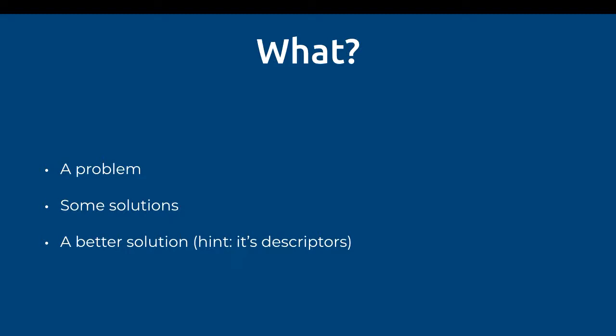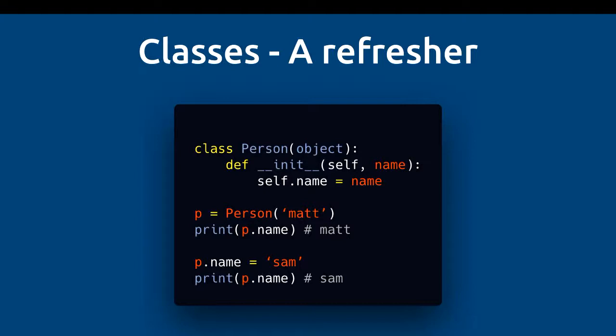So to outline this talk, today I'm going to be presenting a problem, some solutions to this problem, and a better solution which is going to use descriptors and why I think that's better. So before we get started, I'd like to cover a quick class. Here we have a person class, and you can see that it's got its initialization method with one attribute, which is name. We can create a person called Matt, and we can access this name attribute using p.name. We can also reassign to these attributes just by assigning to it, and we can see that the value changes to Sam.